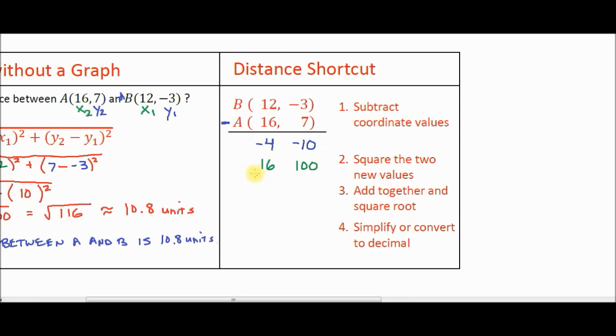Now notice in this step number two, you're always going to end up with positive numbers. Because if you take a positive number and square it, 4 squared, that's going to give you positive 16. And if you take a negative number, in this case, negative 4 and square it, well, a negative times a negative is a positive. So these numbers in step number two will always be positive. Step number three, add together and square root. So we're going to add these two numbers together. 16 plus 100 is 116. And then it says square root that number.